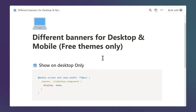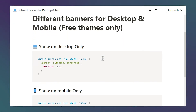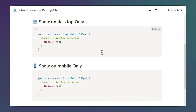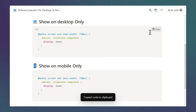After you've created the sections, click on the link in the description to open the page that contains some code snippets that we're going to copy-paste. Let's copy the first one, which makes the banner or slideshow only visible on desktop, so simply click on this copy button.